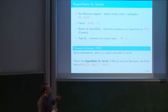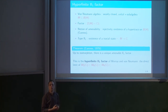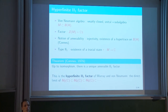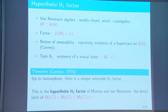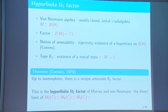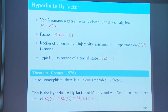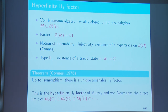The hyperfinite II₁ factor was the very first example of a II₁ factor, introduced by Murray and von Neumann, and it's very easy to construct. You start by putting the 2×2 matrices in the 4×4, in the 8×8, by every time putting matrices along the diagonal. You take a direct limit that gives you a star algebra, and there is a unique way to complete that into a II₁ factor. That's the basic object for today.